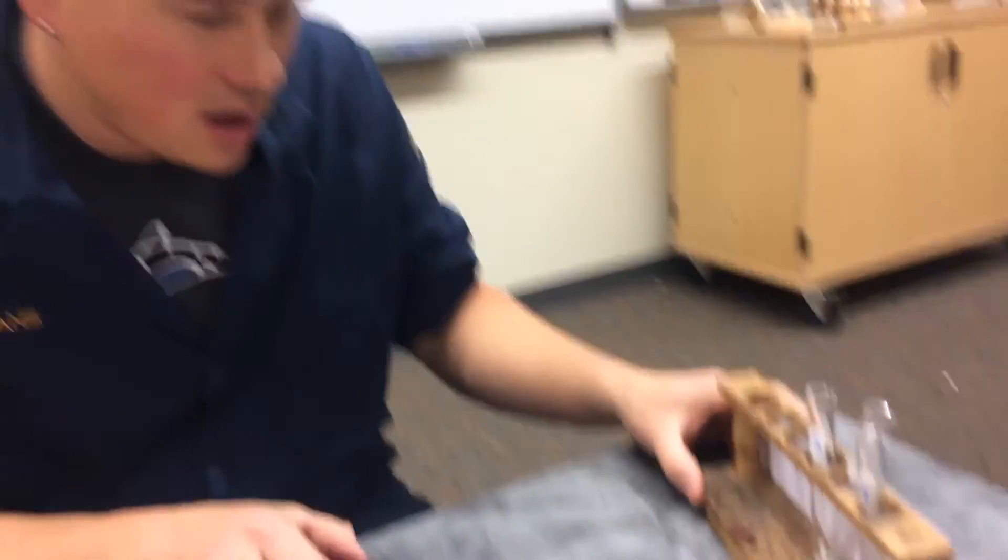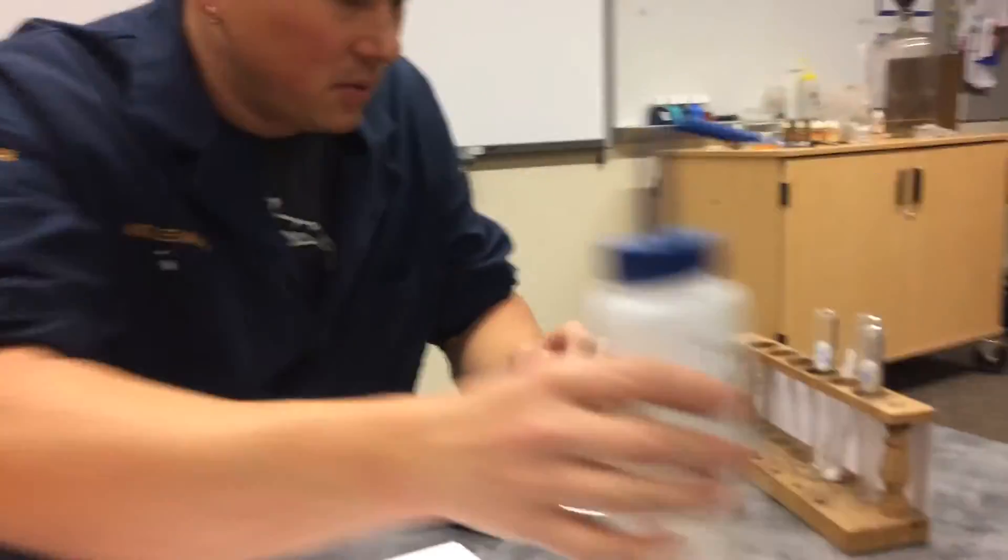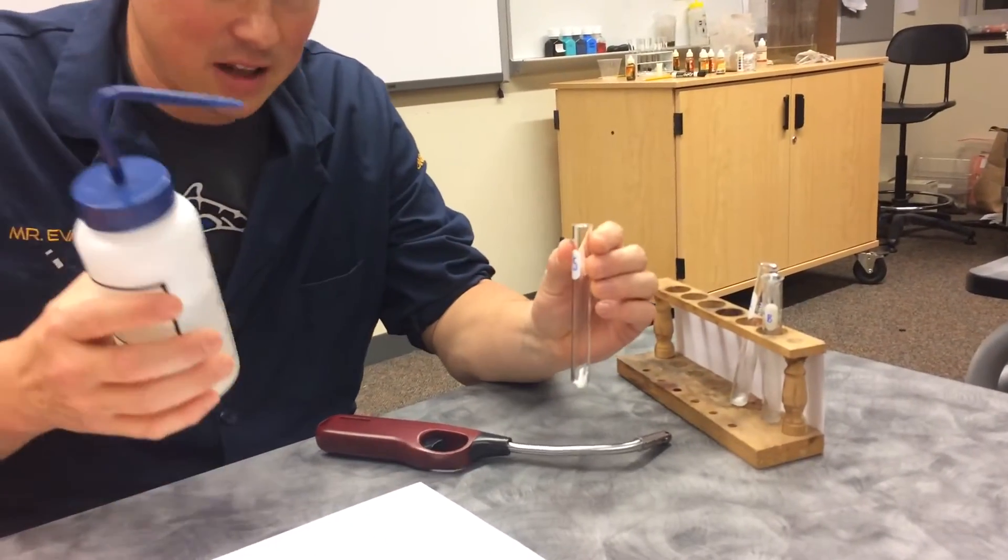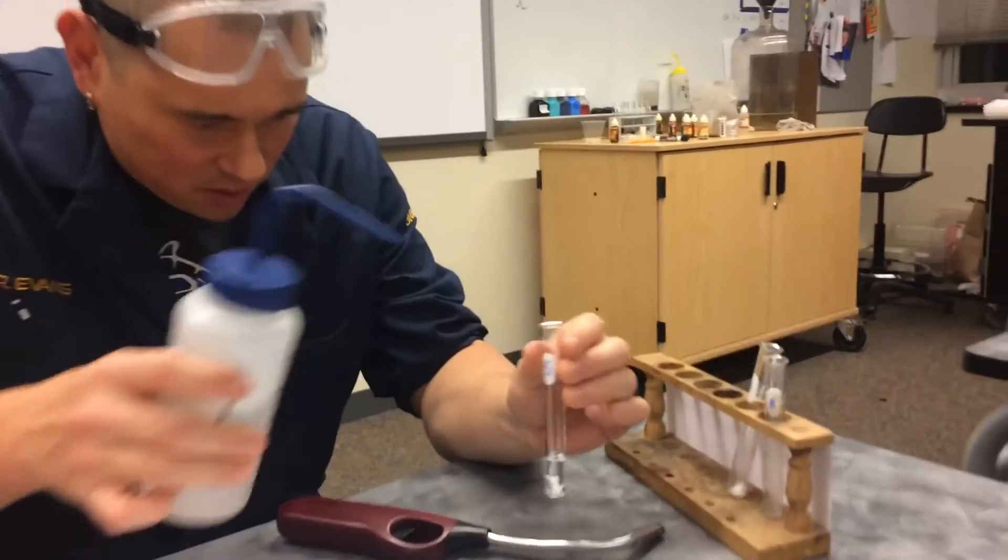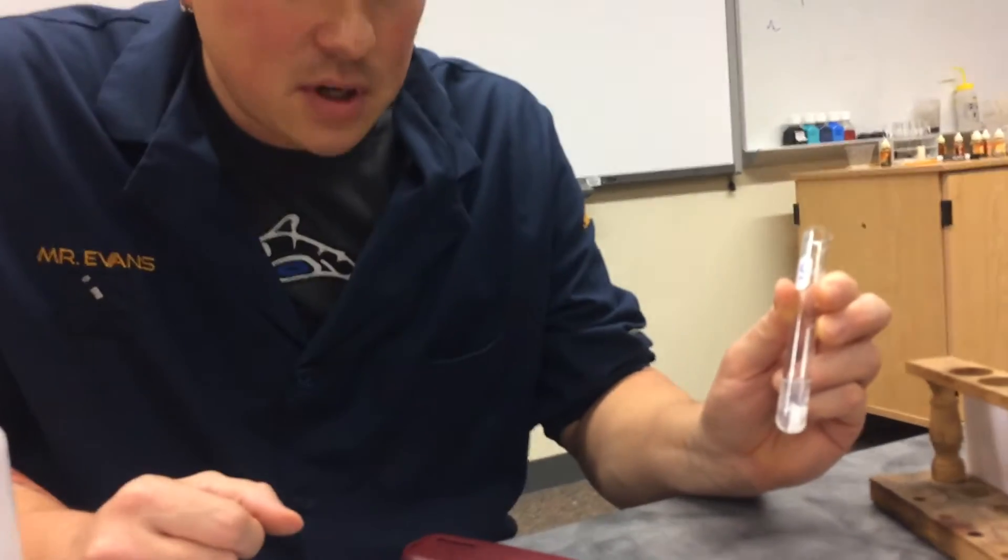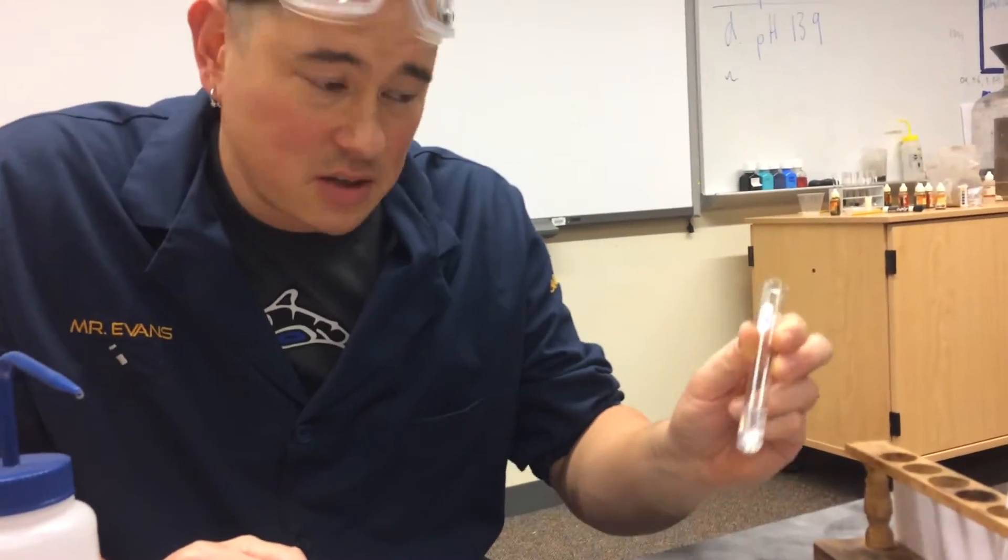All right. So basically what I'm going to do is I set these up so that I've got my soap in here. I'm going to add a little bit of water, but I just wanted to make sure you saw it with soap. So we're going to add a little water just because we know that when we test with universal indicator, it needs to be a liquid.